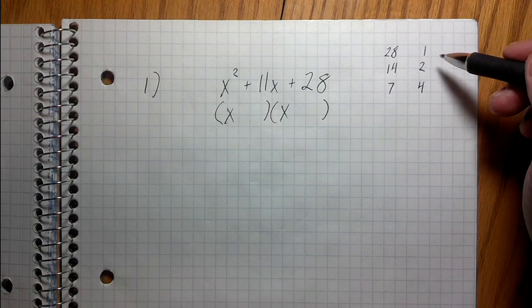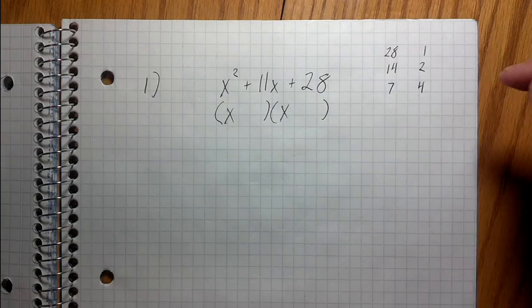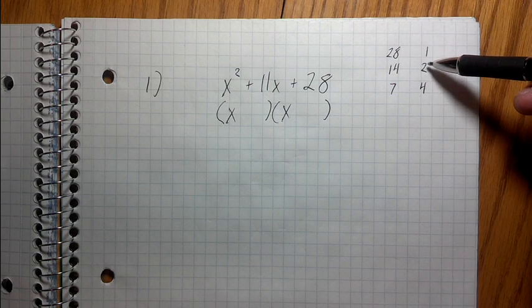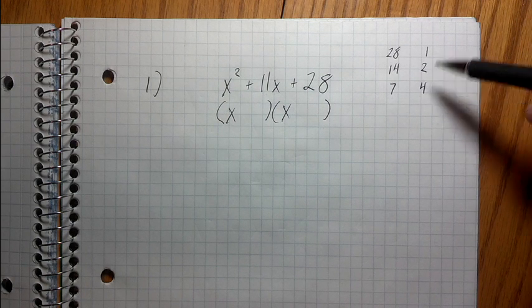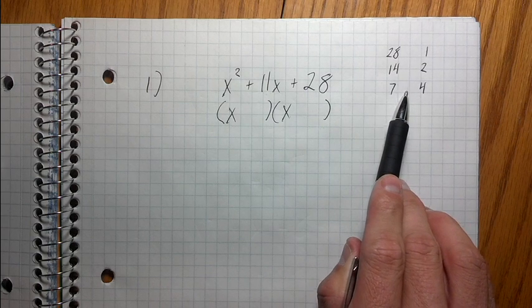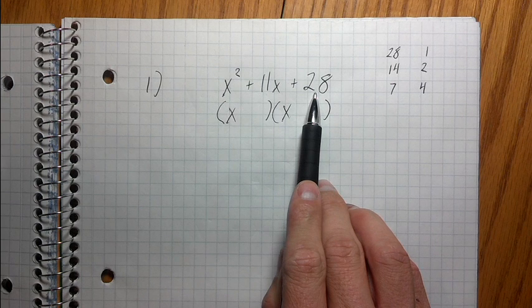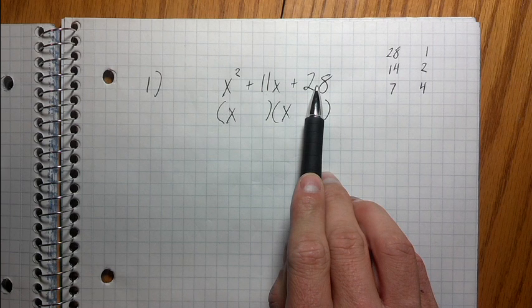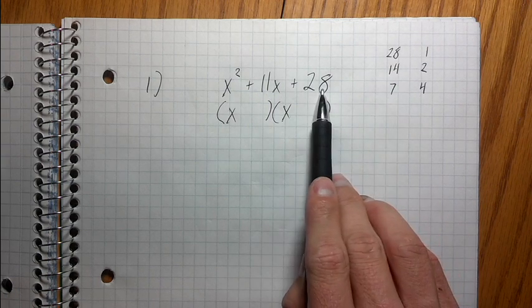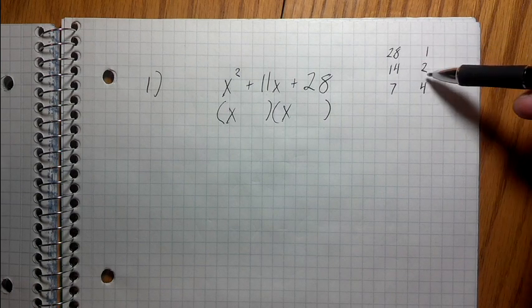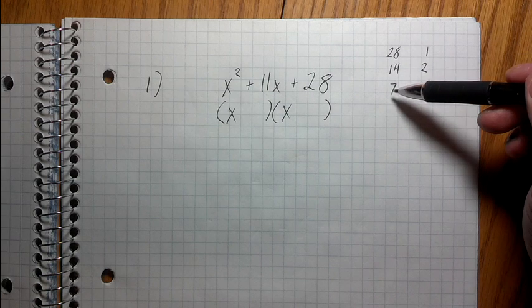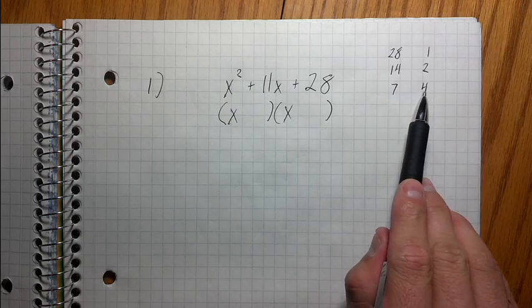Now, how do I know which of these pairs of numbers to use? I need to figure out which pair, when added together, gives me the middle number. The two conditions a pair must satisfy are: the two numbers must multiply together to make 28, and simultaneously they need to add to make 11. So: 28 and 1 wouldn't work because that gives you 29. 14 and 2 wouldn't work — that gives you 16. So it has to be 7 and 4, because 7 plus 4 is 11 and 7 times 4 is 28.